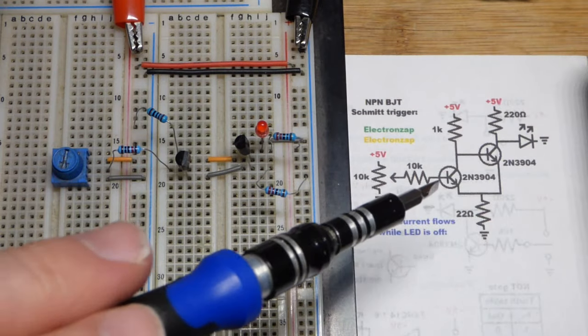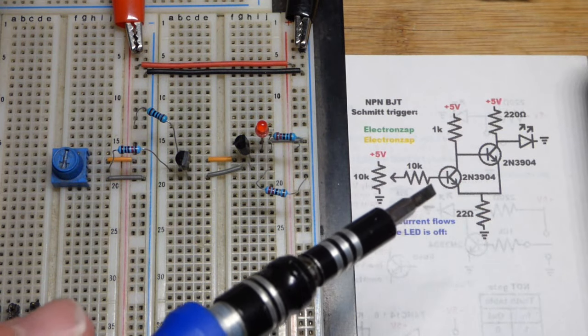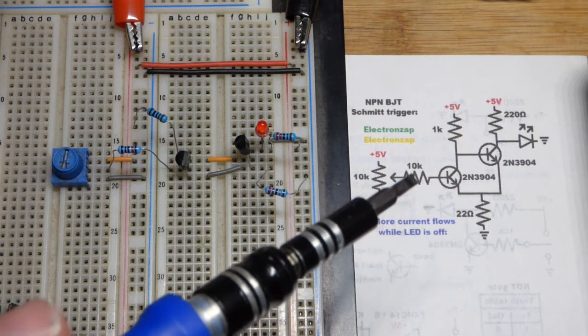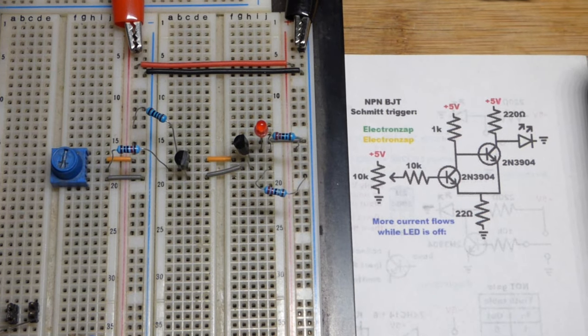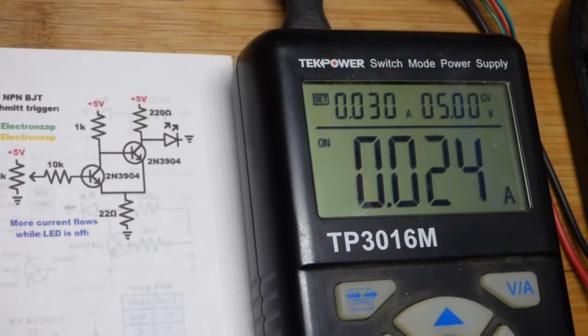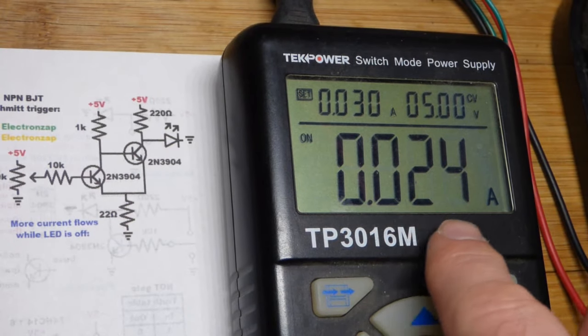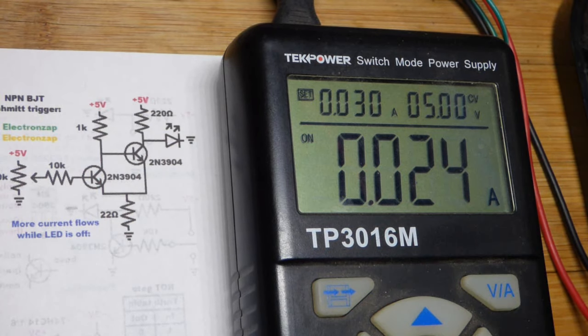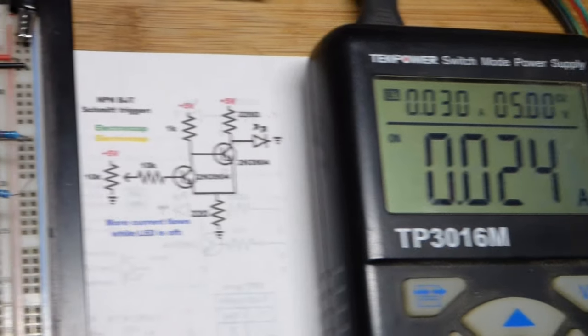So now in this video, we have a couple NPN bipolar junction transistors here wired as a Schmitt trigger. So before we begin, this is definitely not an ideal circuit. We're wasting a lot of current right now. We would want to modify this to be a practical circuit.